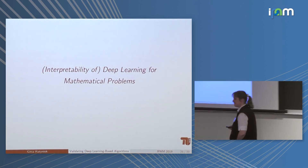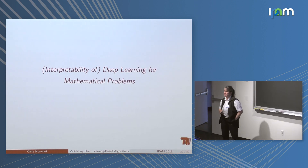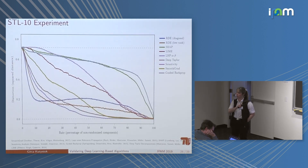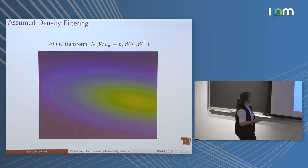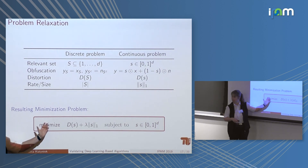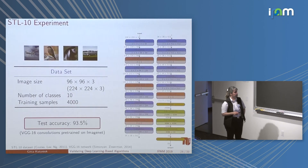Regarding the question of whether binarizing the continuous solution changes results dramatically: we only compute the continuous version since the discrete problem is infeasible. When computing the rate-distortion curve for comparison, we do apply thresholding to obtain the binarized relevant set at each rate level.